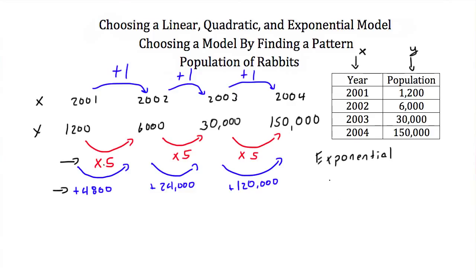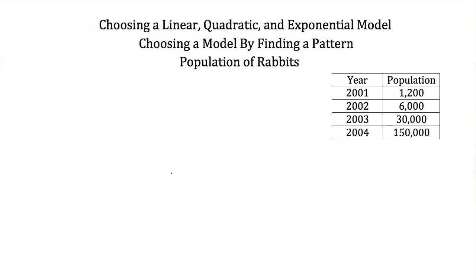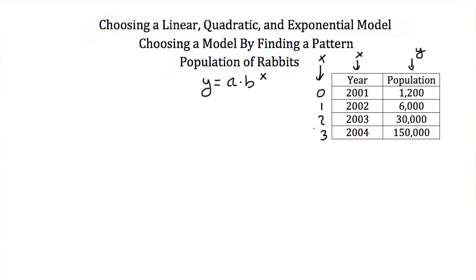Since this fits an exponential model, it will be in the form y = a · bˣ, where x is the year and y is the population. To simplify, instead of using 2001–2004 for x, I'll relabel them as year 0, 1, 2, and 3. The first point I'll plug in is (0, 1200).